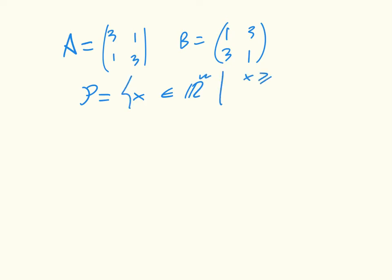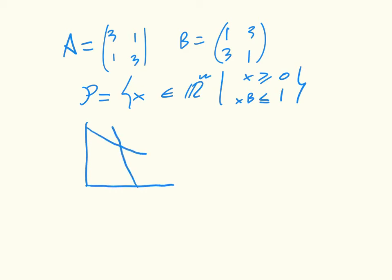We have that X has got to be greater than 0, and XB has got to be less than or equal to 1. We drew out the best response polytope as something somewhat like this, where this was a quarter, a quarter; this was a third, 0; this was 0, a third; and that's obviously 0, 0. So this is P.